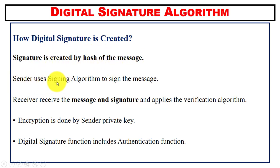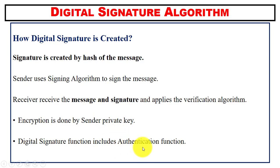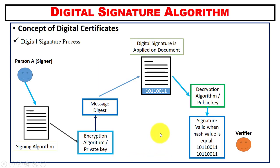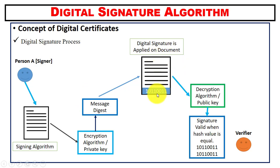A digital signature is created using the hash of the message. The sender uses a signing algorithm to sign the message. Suppose we have sender A as the signer — the signing algorithm is applied to the document, encryption is performed, and a message digest is generated. The result is a digitally signed document with the signature code attached.